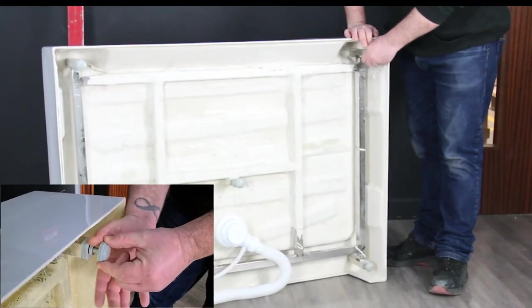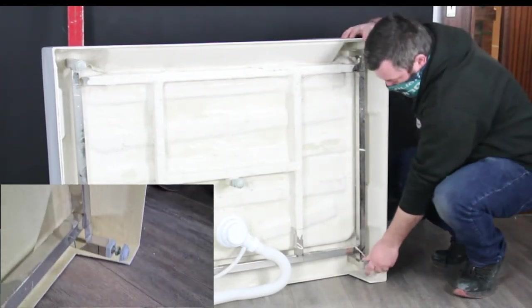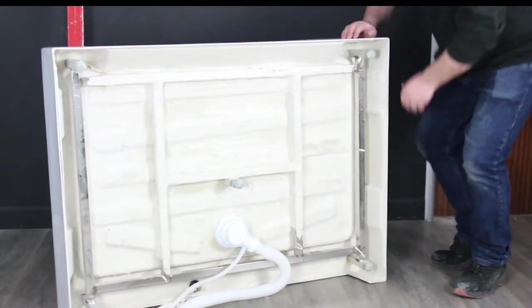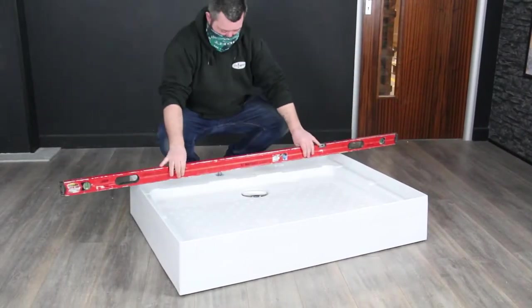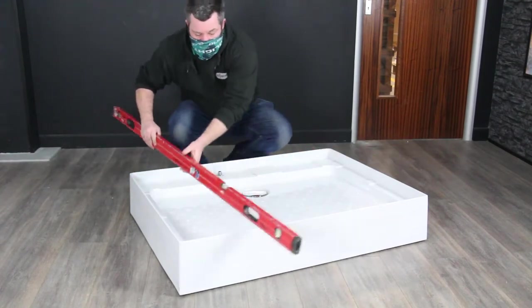Lock this new height into position by tightening the nuts on each feet you've changed, then push the tray back into its final resting position. Once again use the spirit level and see how level your tray is now. Keep repeating this process until your tray is completely level. Once it is, you're ready to start the build.